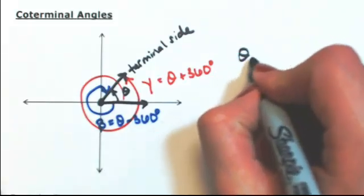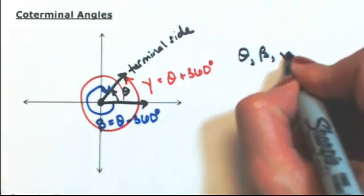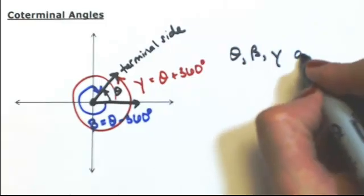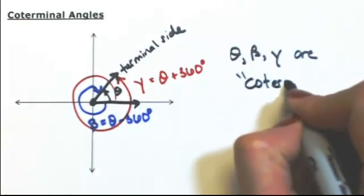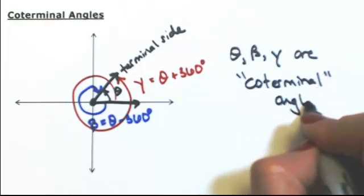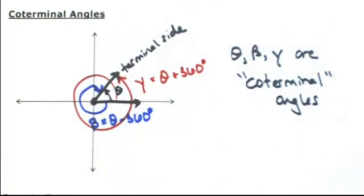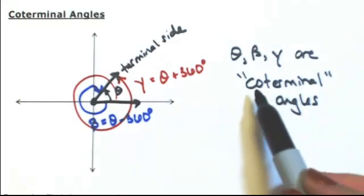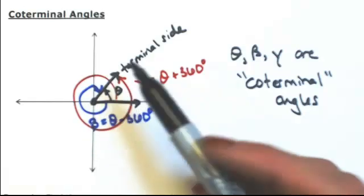Theta, beta, gamma, these are called coterminal angles. If you think about it, coterminal means they share a coterminal side, which they do.